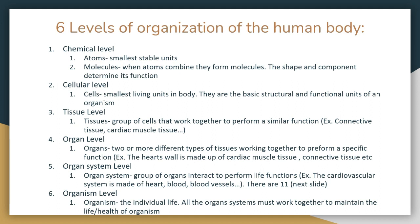The fifth level is organ system — a group of organs that interact to perform life functions. For example, the cardiovascular system is made up of the heart, blood, and blood vessels. There are 11 organ systems total. And finally, the organism is an individual life where all organ systems work together to maintain the life or health of that organism.